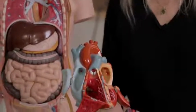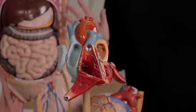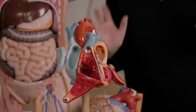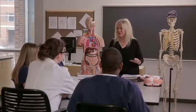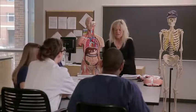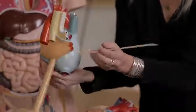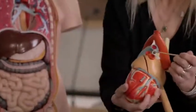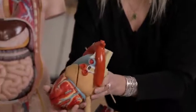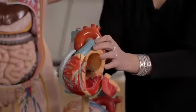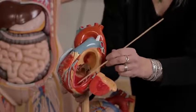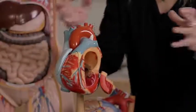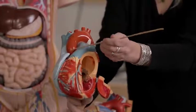Blood carried through the pulmonary trunk into the pulmonary circulation picks up oxygen as it passes through the pulmonary blood vessels. When that oxygenated blood returns to the heart, the vessels carrying it will be red. We can see those pulmonary veins represented in red on the model, carrying oxygenated blood from the left and right lungs back to the left atrium.